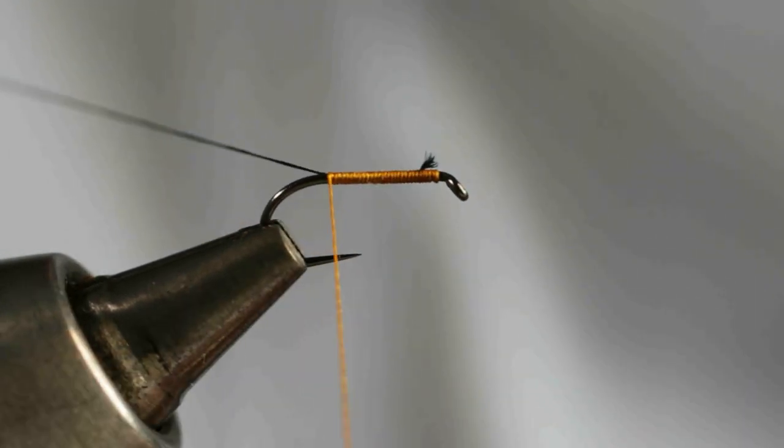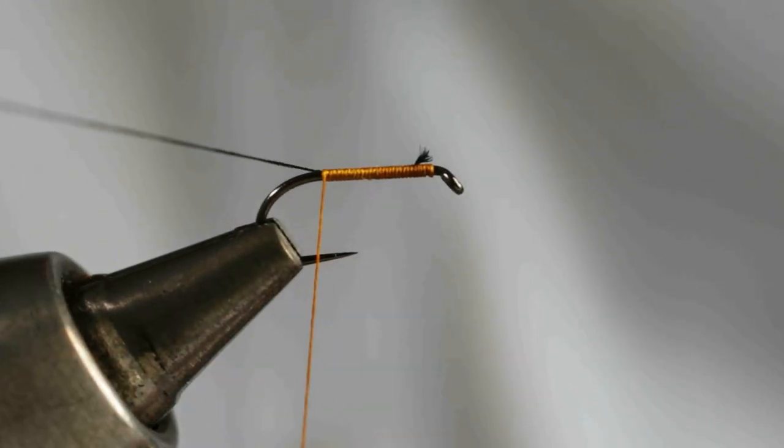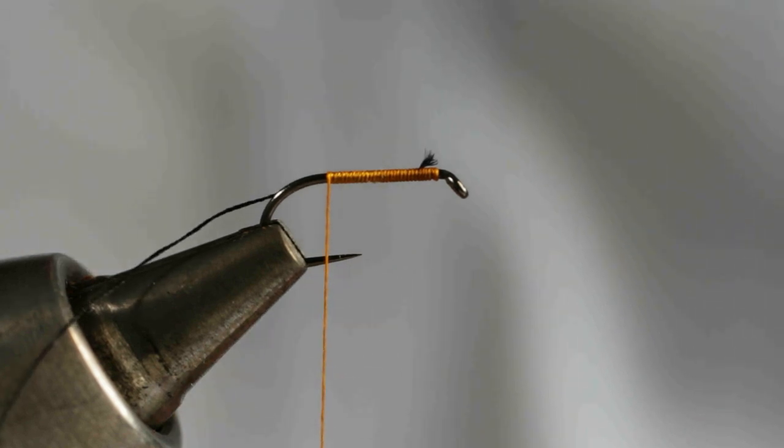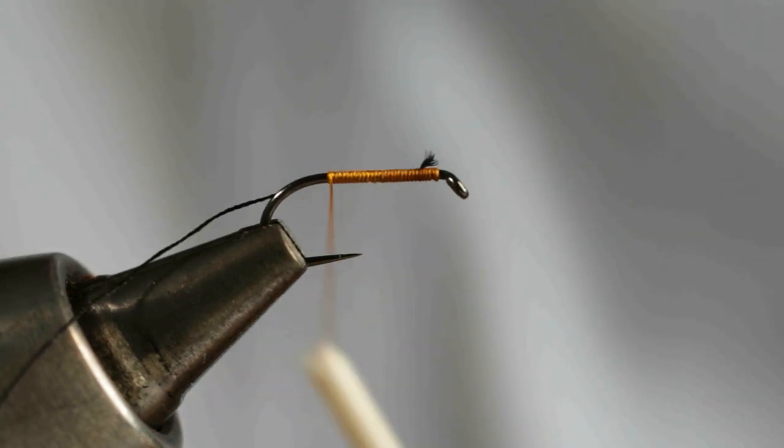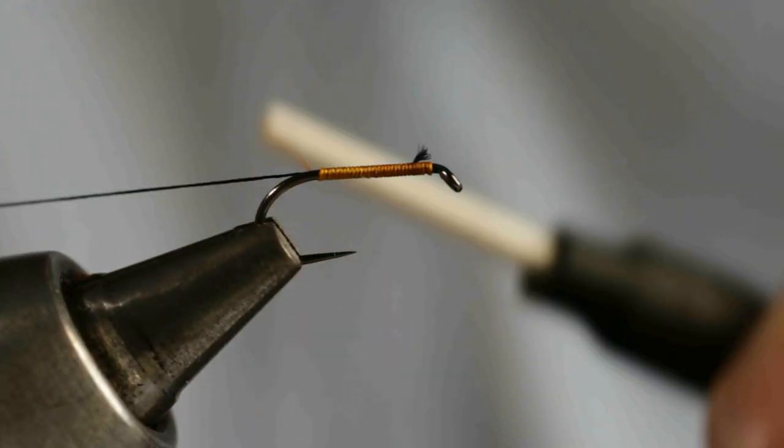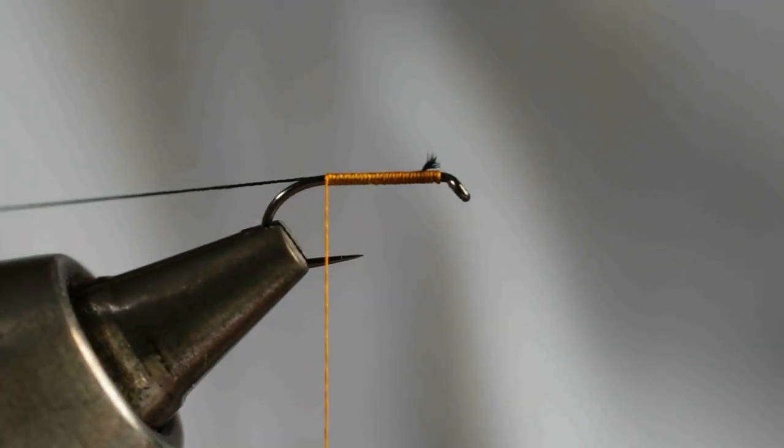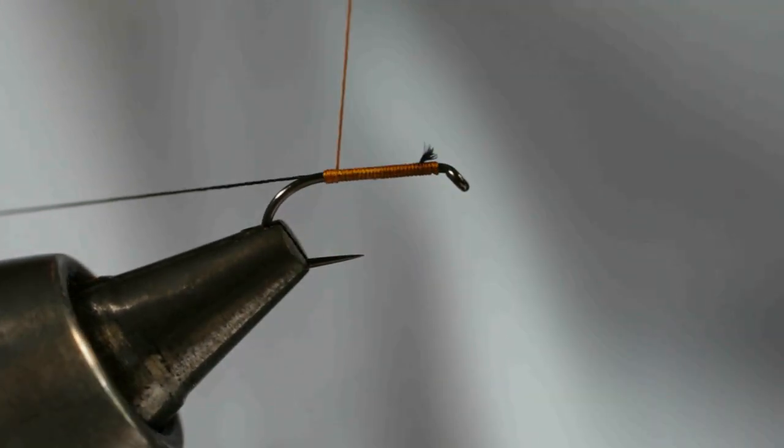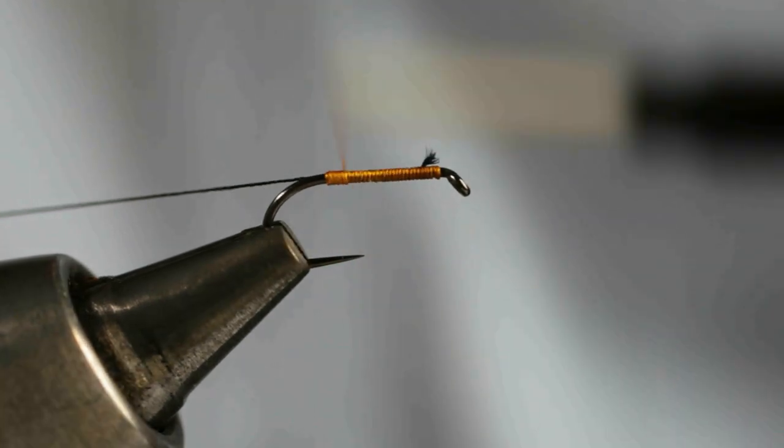Now you want to keep your fly body reasonably short. The tradition is to keep it somewhere between the point of the hook and the end of the barb. Because I'm using a barbless hook it's somewhat difficult to judge but I'm quite happy with that length there. Now again come with your silk in tight touching turns and bring it back up the body of the fly.